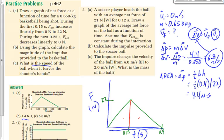Question number two asks you to solve for the mass — same kind of process. Get the change in velocity and the impulse, then divide to solve for mass. Same approach, just solving for a different variable.